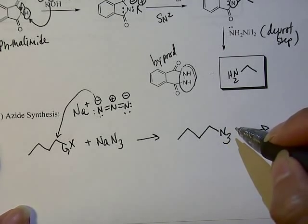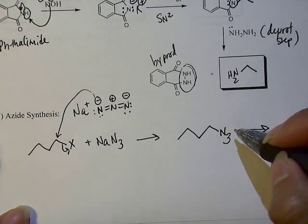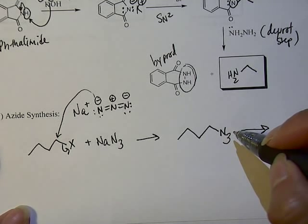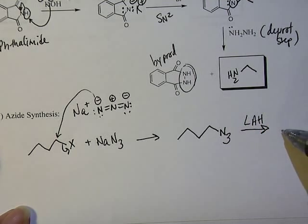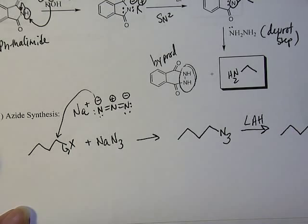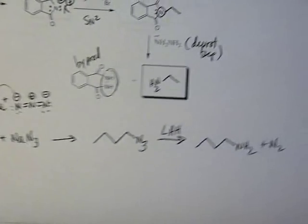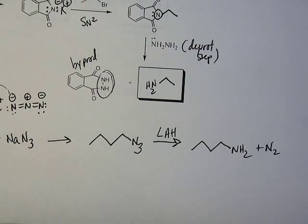All you need to do after you displace the halide and put the nitrogen group on—one of the nitrogens is going to serve as the amine and the other two nitrogens leave as nitrogen gas. So you reduce it with lithium aluminum hydride and release the nitrogen gas to give you the alkylated amine.